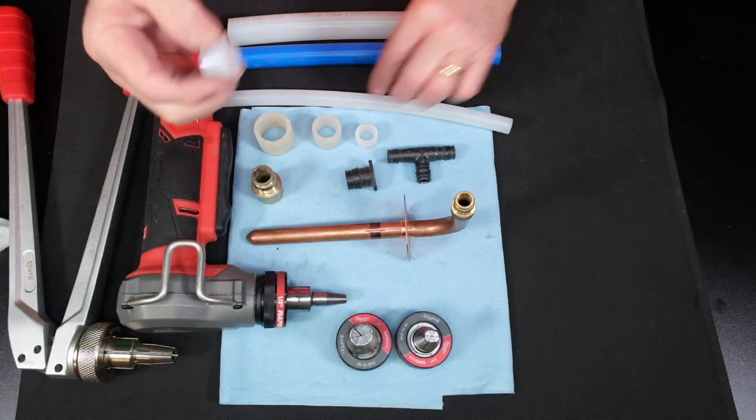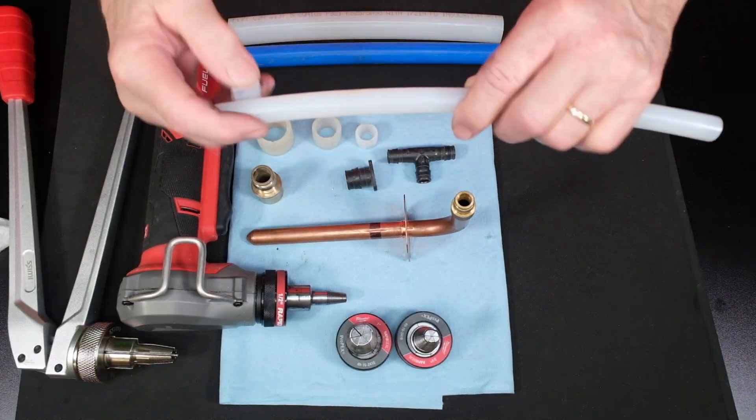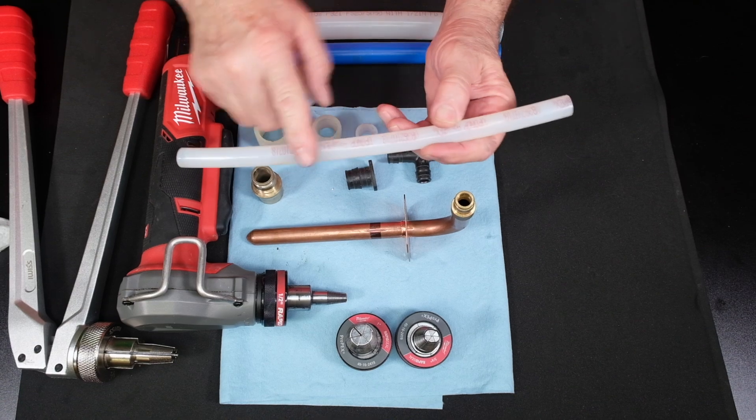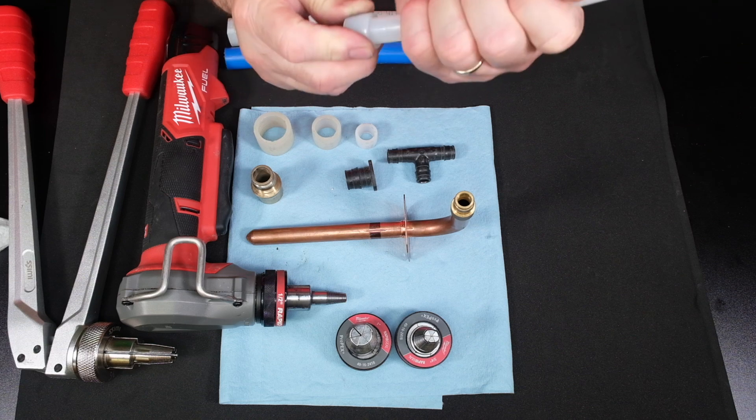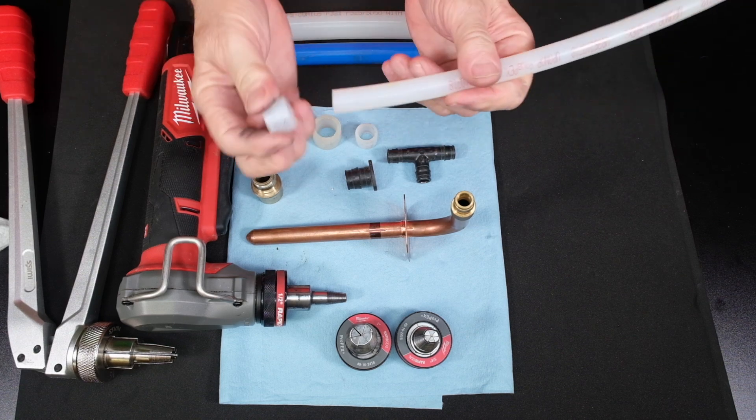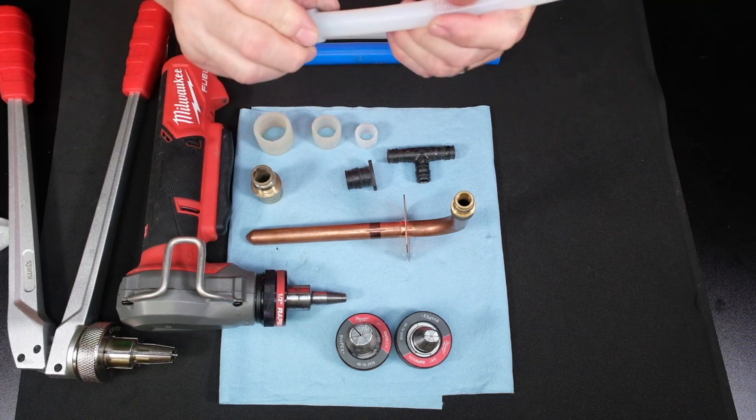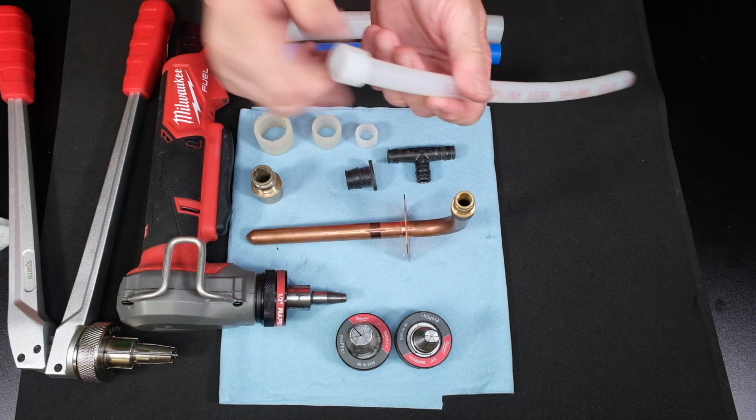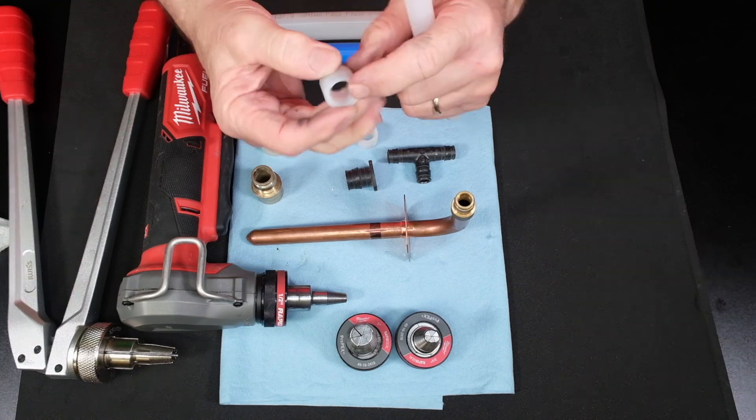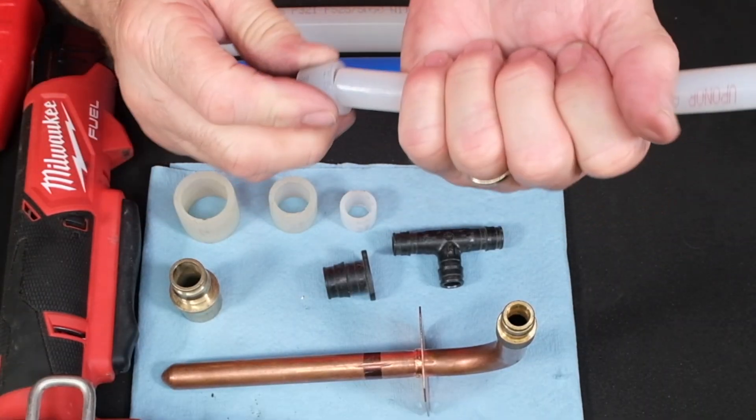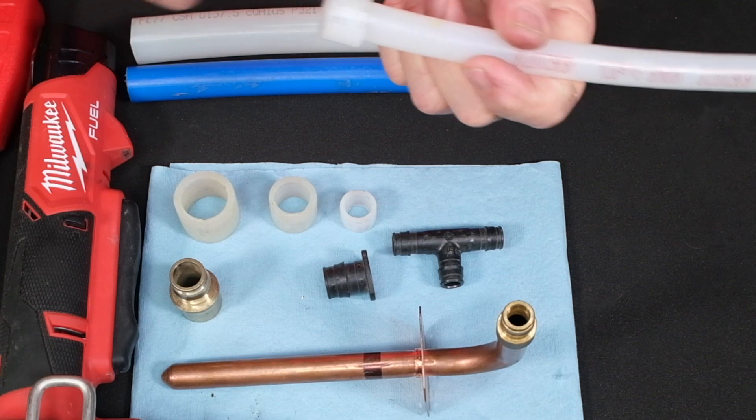Now, this only goes on the pipe one direction. We have some PEX-A right here. This happens to be Upanor PEX-A AquaPEX. This will slide only on one direction. We can't put it on the other way. And it stops when it gets on all the way. You have to push it all the way down. It has actual stops built into it right there.